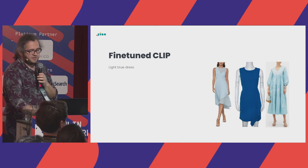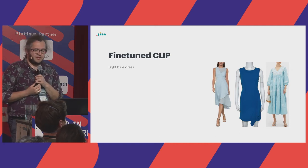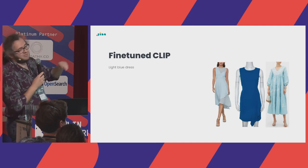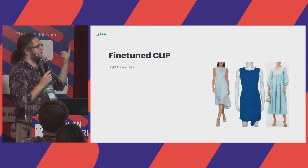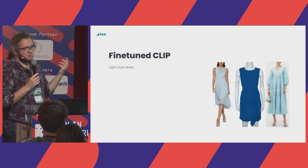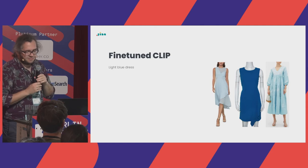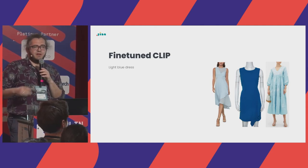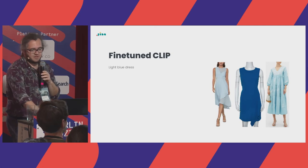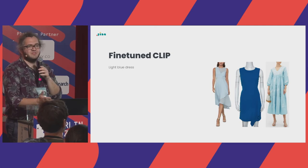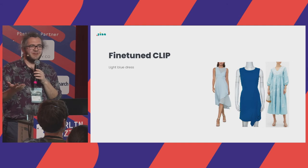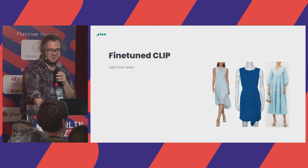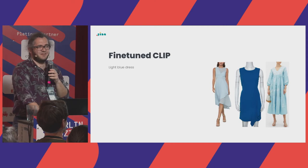One area where CLIP performed better than any other model: visual queries like 'light blue dress'. These are the top three results — you could argue the middle one isn't light blue, but there were only two light blue dresses in the dataset. Whenever we had very visual features, CLIP worked really well. Fashion is an ideal domain for this since it has many visual features — it might be harder for, say, technical parts.